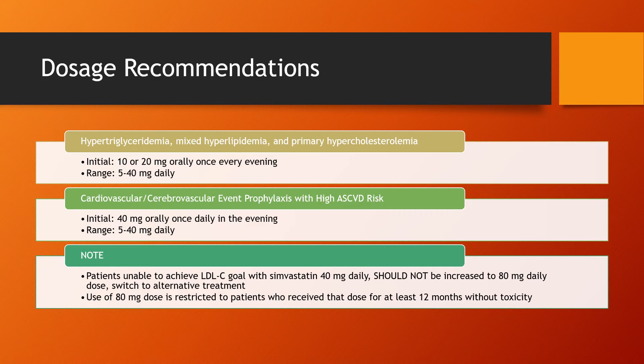Next, we have cardiovascular and cerebrovascular event prophylaxis. Initially, starting patients at 40 mg orally once daily in the evening, with our range between 5 and 40 mg daily. It's also important to note that patients who are unable to achieve their LDL goals with Simvastatin at 40 mg should not be increased to 80 mg daily — they should switch to an alternative treatment. The use of the 80 mg dose is restricted to patients who have received that dose for at least 12 months without toxicity.